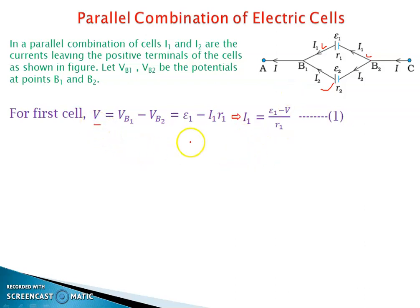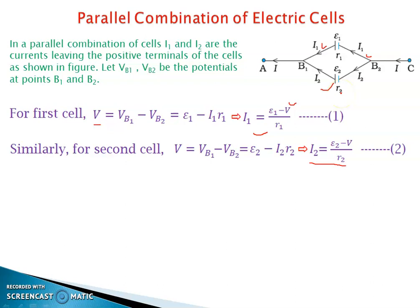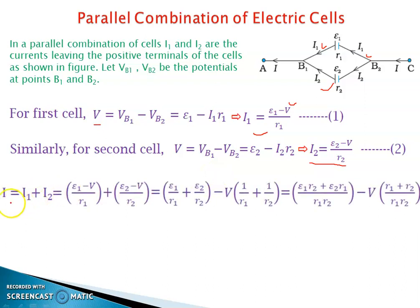We can write V = E1 − I1·R1 for the first cell. From this we get I1 = (E1 − V) / R1. This is the current in the first cell, assuming terminal potential difference is V. Similarly for the second cell, I2 = (E2 − V) / R2. Since in parallel combination the terminal potential difference is common, both V values are the same. We get I1 and I2, and since I1 + I2 = I, we can write I = I1 + I2.